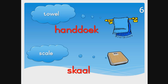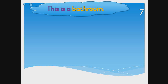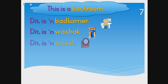Let's practice some Afrikaans sentences. In English we would read: This is a bathroom. And in Afrikaans we'll read: Dit is 'n badkamer. This is a bathroom.